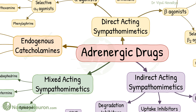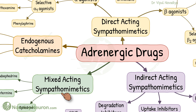There are four broad categories of adrenergic drugs: endogenous catecholamines, direct-acting sympathomimetic drugs, indirect-acting sympathomimetic drugs, and mixed-acting sympathomimetic drugs.